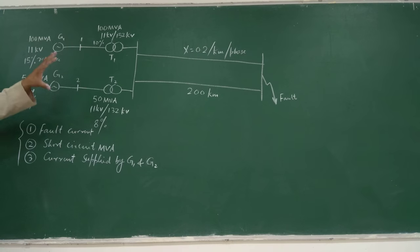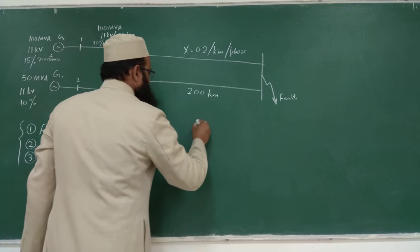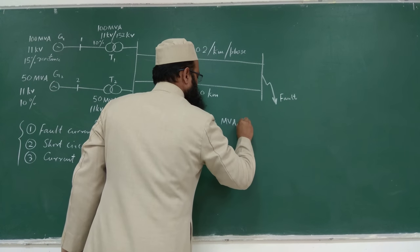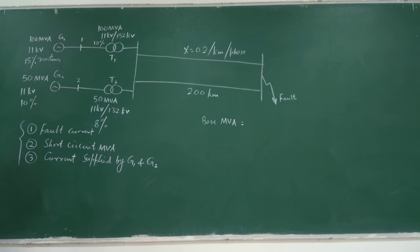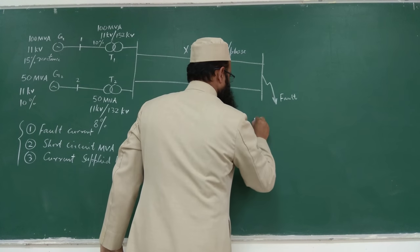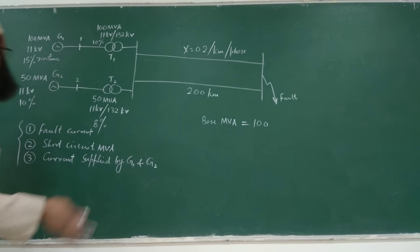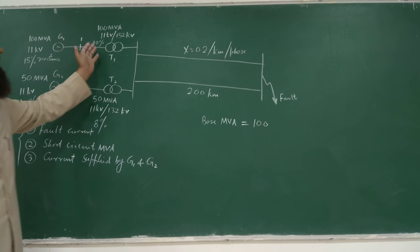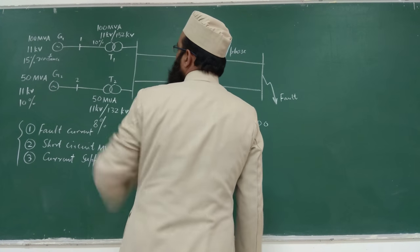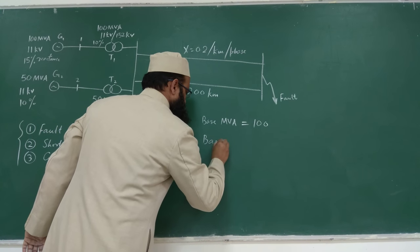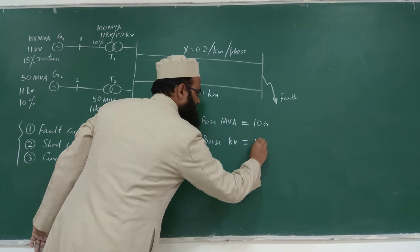For per unit calculations, we assume common base values. Assume base MVA = 100 MVA (generally the highest capacity is taken as base). Assume base KV = 11 KV on the transformer low voltage side, which gives 132 KV on the transformer high voltage side.